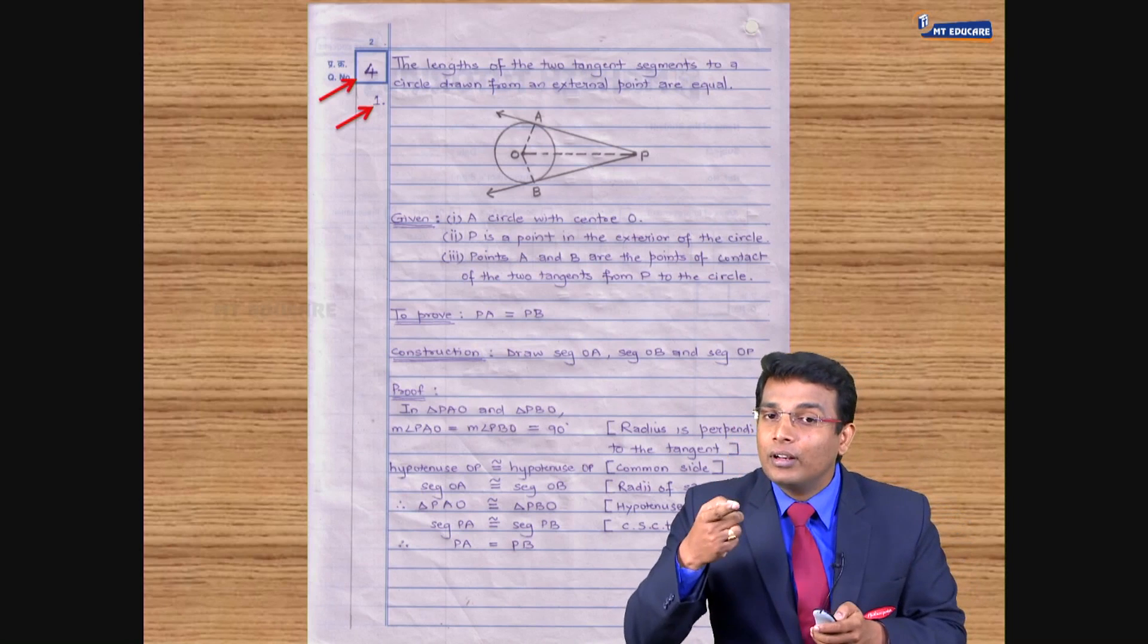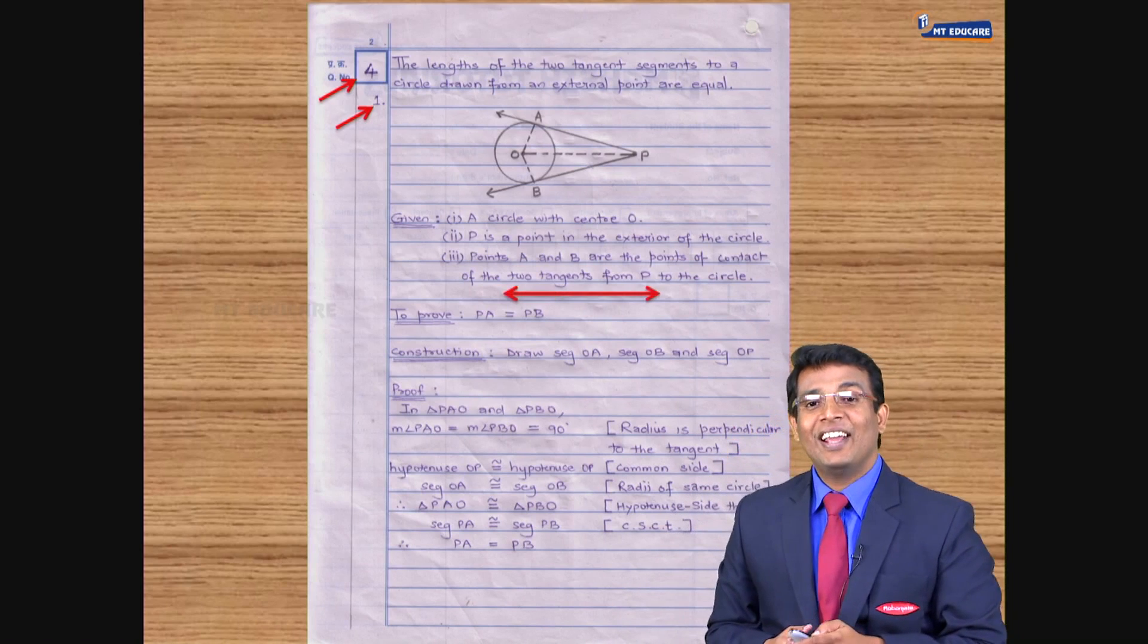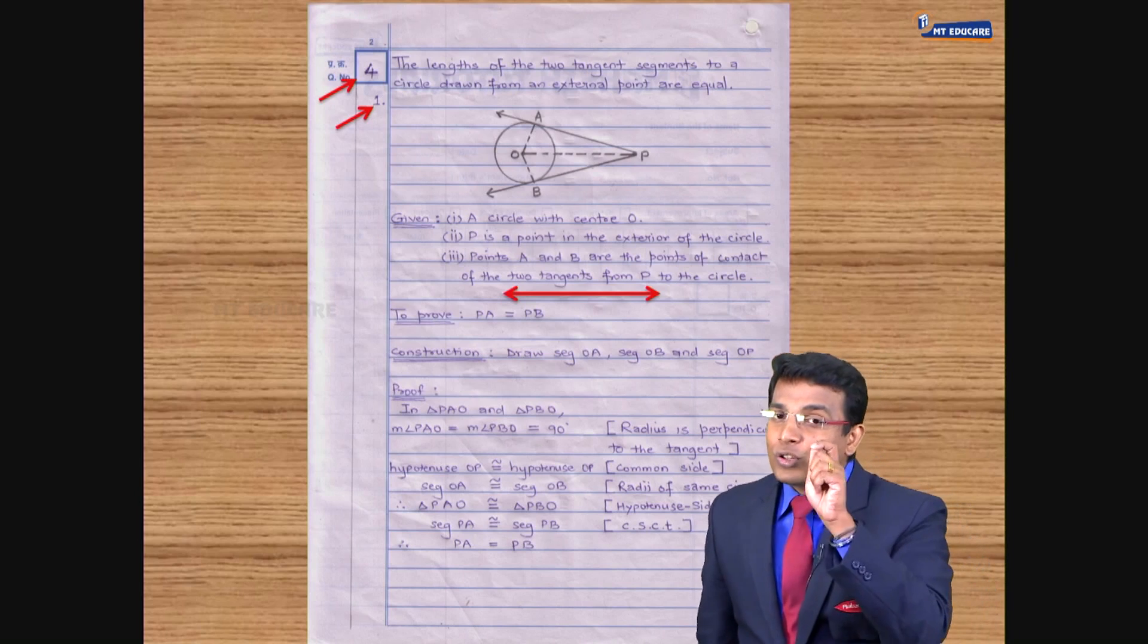Next comes the given, then the to proof and the construction. And each has to be double underlined.